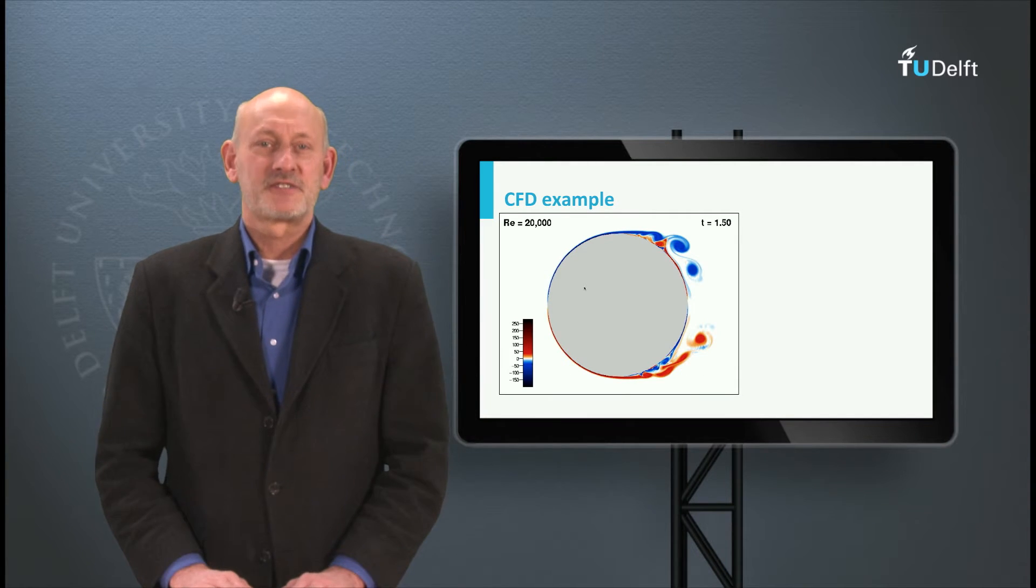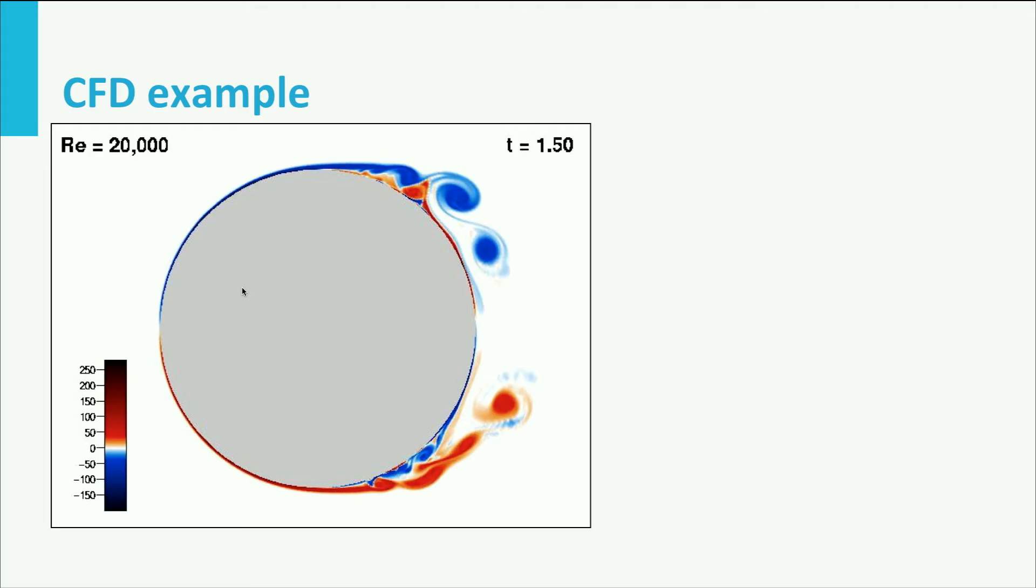Let us take the flow over a circular cylinder as an example. Here is a picture of a calculation of the flow around a two-dimensional cylinder at a low Reynolds number of 20,000. Two-dimensional means infinitely long. As you can see the flow forms vortices at both sides of the cylinder while separating.